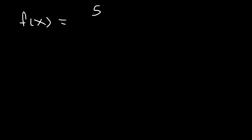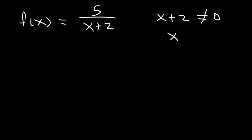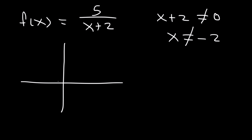Here's another example: 5 divided by x plus 2. The denominator x plus 2 cannot be zero because that would be the vertical asymptote. So x cannot equal negative 2 — that is the point of discontinuity. If we graph this function, we're going to have a vertical asymptote at x equals negative 2. This is another infinite discontinuity.